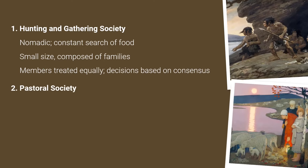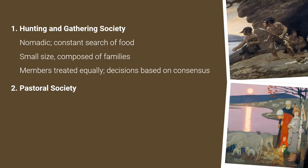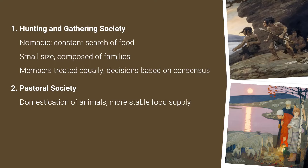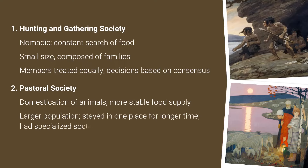The Pastoral Society was characterized by the domestication of animals for food. As such, it had a more stable and predictable food supply. It was larger in population, stayed in one place for a longer time, and had specialized social tasks. It often produced surplus food and resources which it traded with other societies for survival.